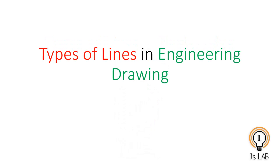Hello and welcome back to my channel. Today I will discuss types of lines in engineering drawing. Engineering drawing is a language used to convey messages between engineers using figures. Just as the English language has alphabets to express messages using groups of letters, in engineering drawing you convey messages in the form of figures or drawings, so there should be some equivalent of alphabets.